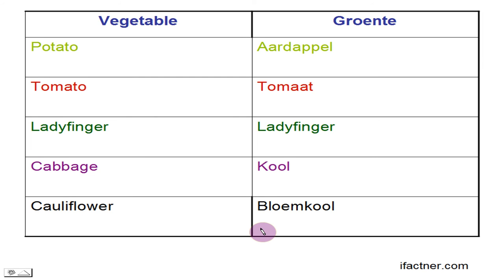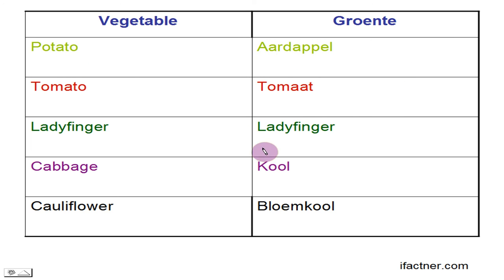So guys and girls, let's start our practice session. I will be speaking the vegetable names in English and I would expect you to translate and speak aloud in Dutch. Vegetable — groenten. Potato — aardappel. Aard is Earth and appel is apple, so potatoes are taken out from the earth, which is why it's called aardappel.